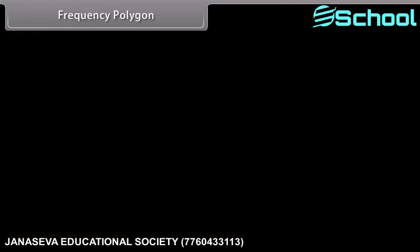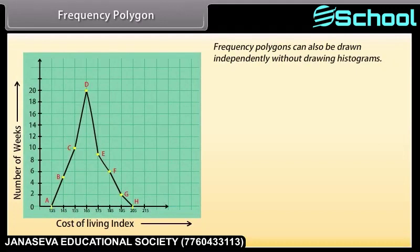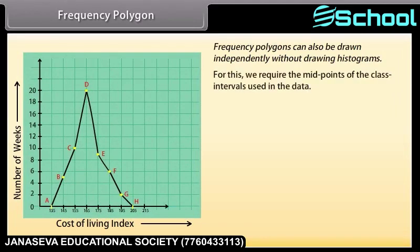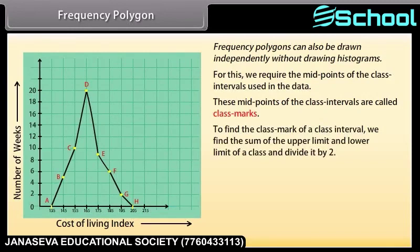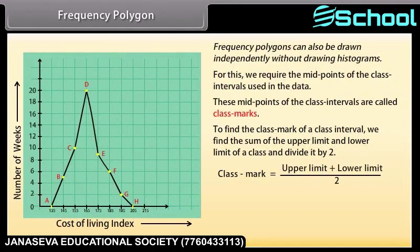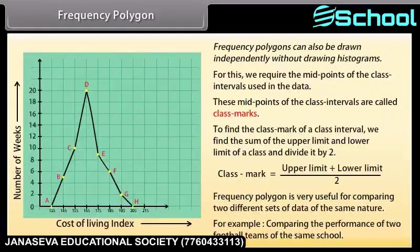In a frequency polygon, a line graph is drawn by joining all the midpoints of the top of the bars of a histogram. Frequency polygons can also be drawn independently without drawing histograms. For this, we require the midpoints of the class intervals, called class marks. The class mark equals the upper limit plus lower limit, divided by 2. Frequency polygons are very useful for comparing two different sets of data of the same nature — for example, comparing the performance of two football teams of the same school.